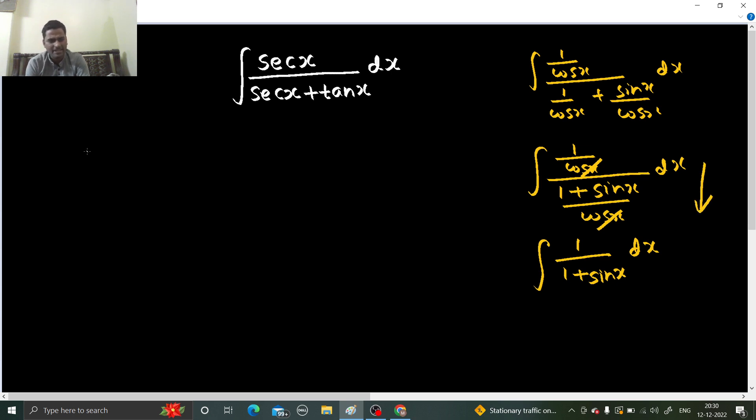But why not do rationalization initially only? Why simplify 1 step or 2 steps? So initially only if you rationalize because you also have an identity in secant and tan. So let's rationalize straight away. So you get secant x divided by secant x plus tan x. And now I am going to multiply this by secant x minus tan x and secant x minus tan x.